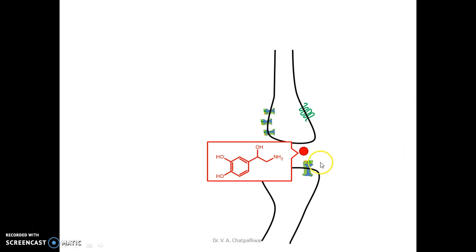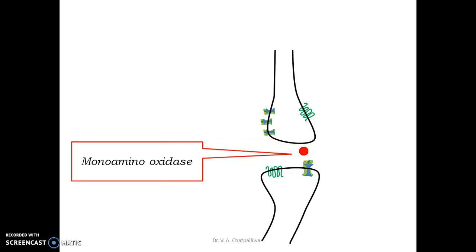patrolling the synaptic cleft. As soon as the molecules of norepinephrine are released into the synaptic cleft, monoamino oxidase enzyme metabolizes most of the norepinephrine and inactivates it, converts it into its metabolite.